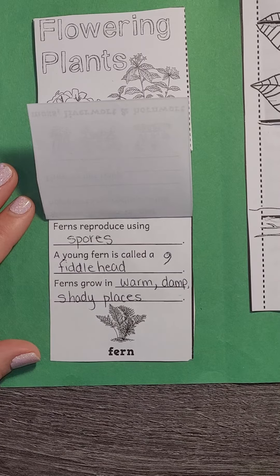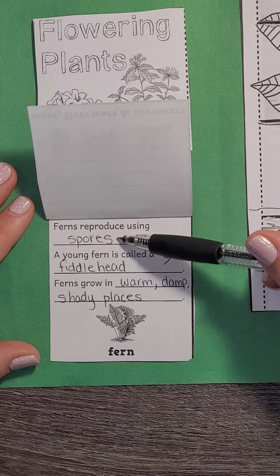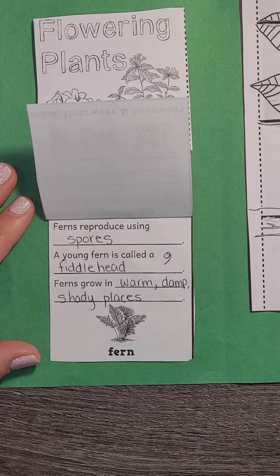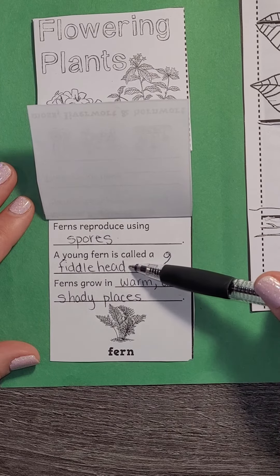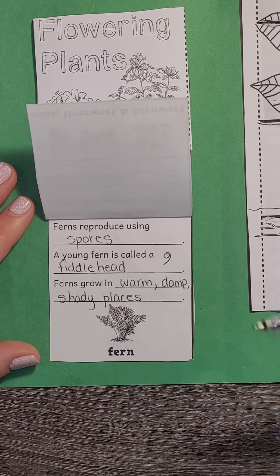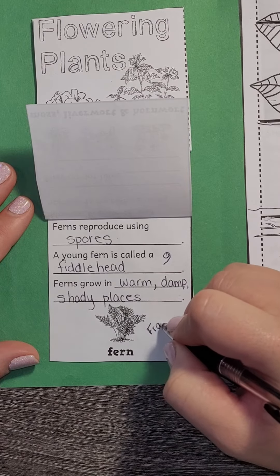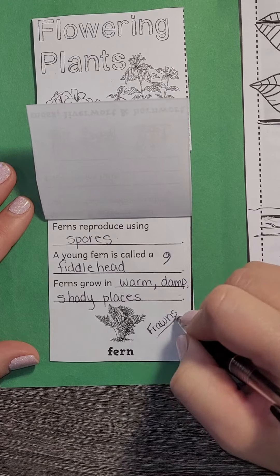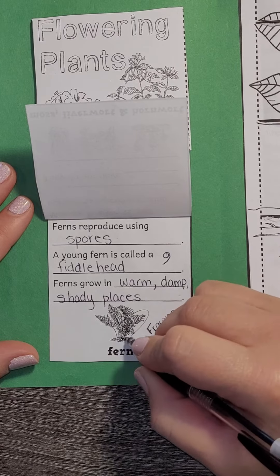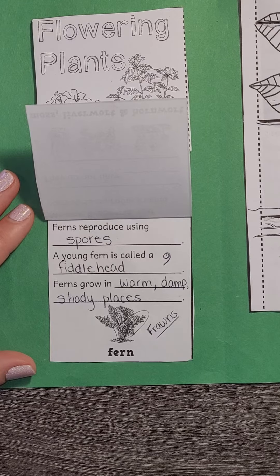Ferns do not make flowers, so therefore they do not make seeds, but instead they have spores. Their spores release, and when they germinate, they grow into what's called a fiddlehead and then eventually a large fern. Remember that they have those fronds, which are the full leaf piece before the little leaves are added on — that's what we call those fronds.